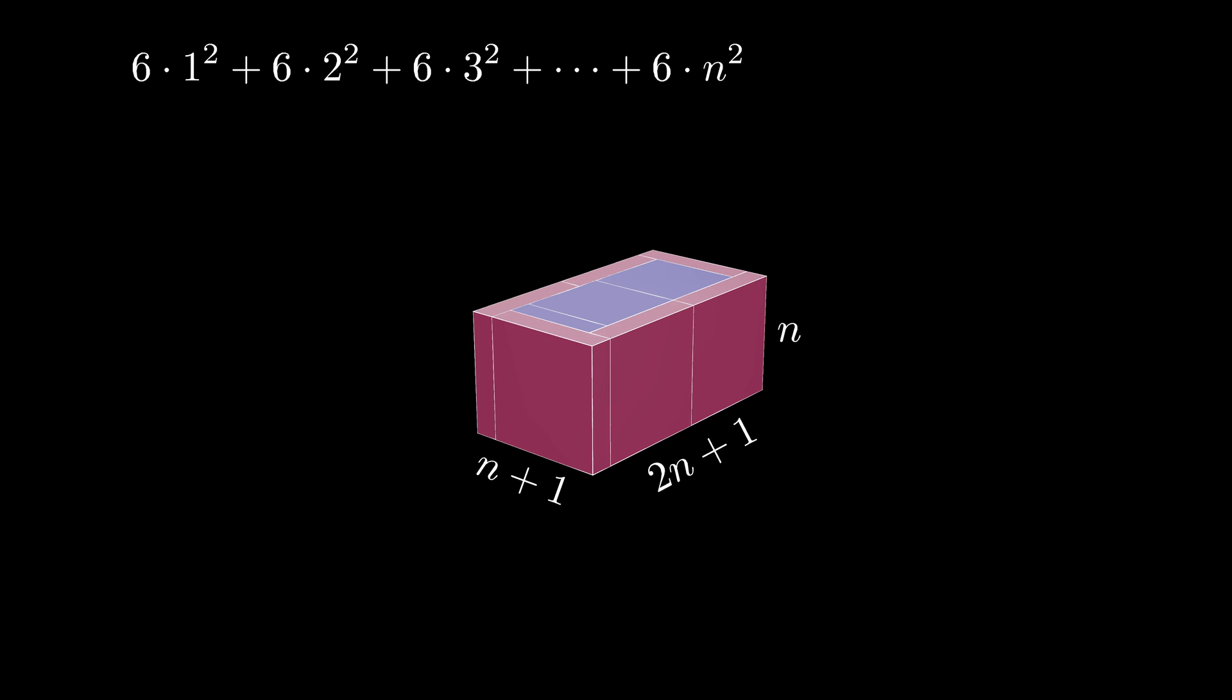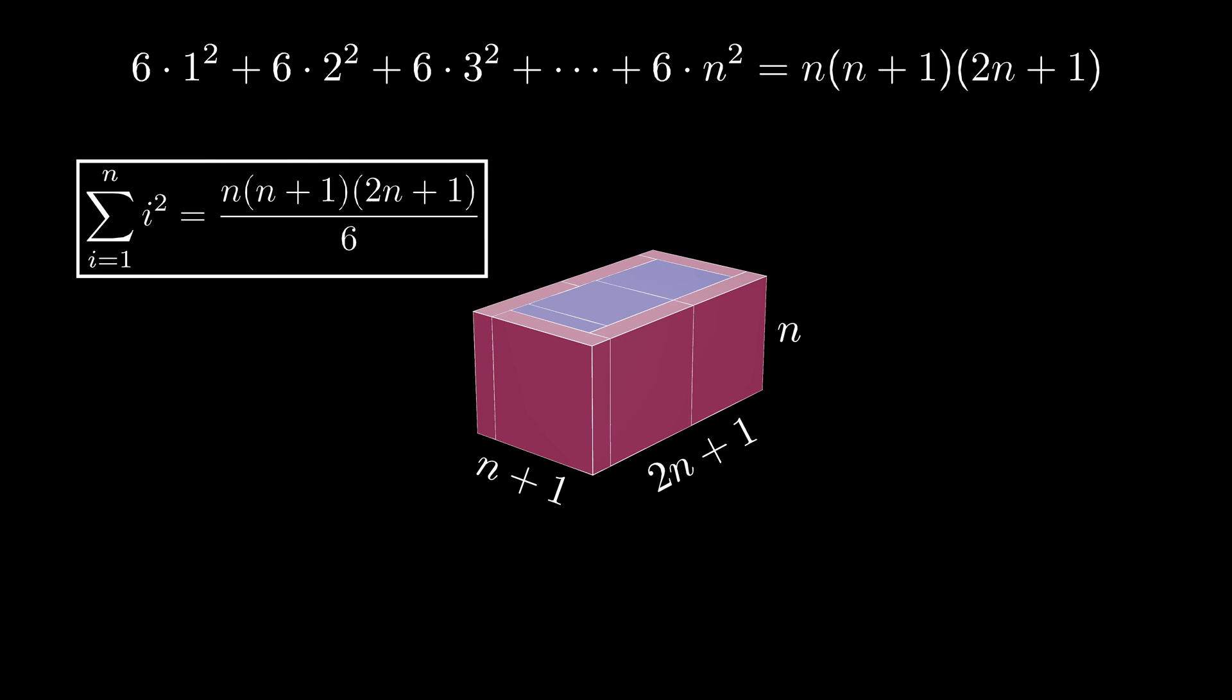Because the final cuboids we added were n by n by 1, this means that the volume of the cuboid is n multiplied by n plus 1 multiplied by 2n plus 1. From this we see that the finite sum where i ranges from 1 to n of i squared is n times n plus 1 times 2n plus 1, all divided by 6.